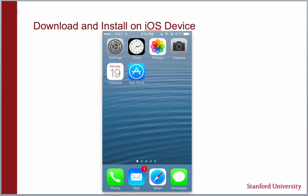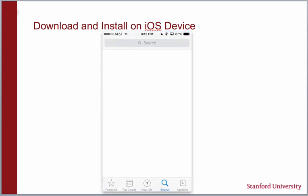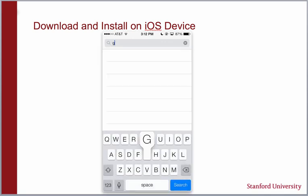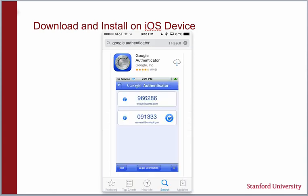Please note, for this tutorial, this will be downloaded on an iOS device that is running the beta version of iOS 7, so it may look a little different from your current iOS device. On your iOS device, launch the App Store icon and search for Google Authenticator. You will then be prompted to install — I have already downloaded Google Authenticator, but I am going to download and install it onto this particular device.